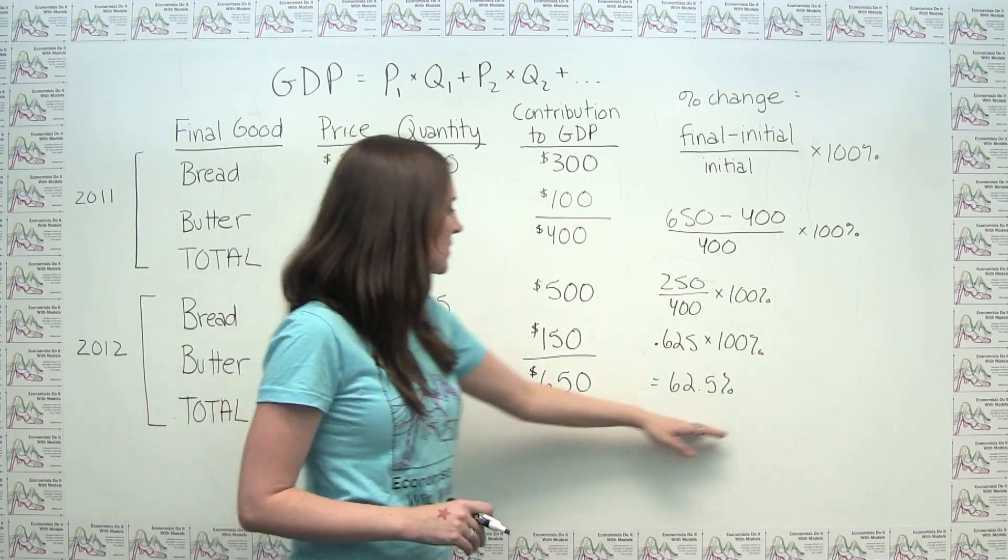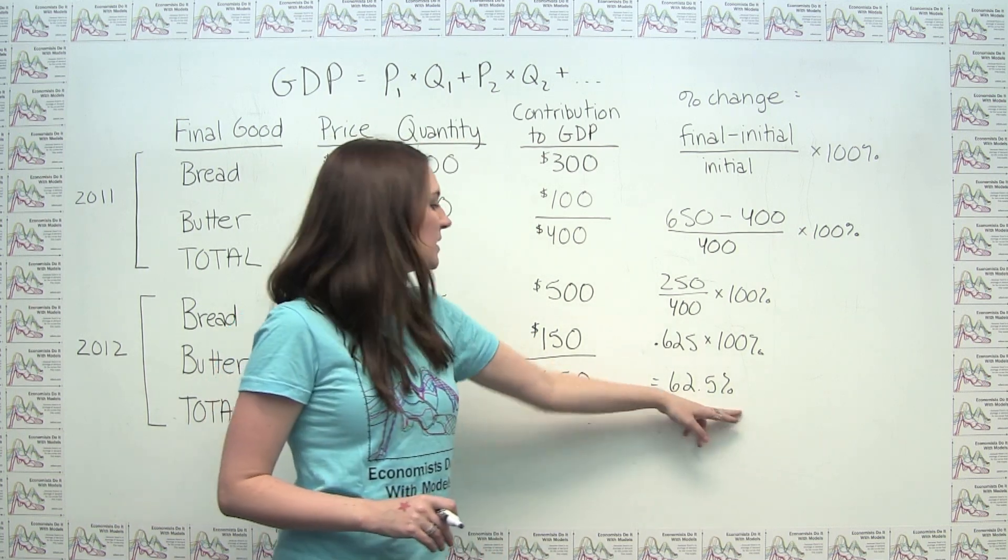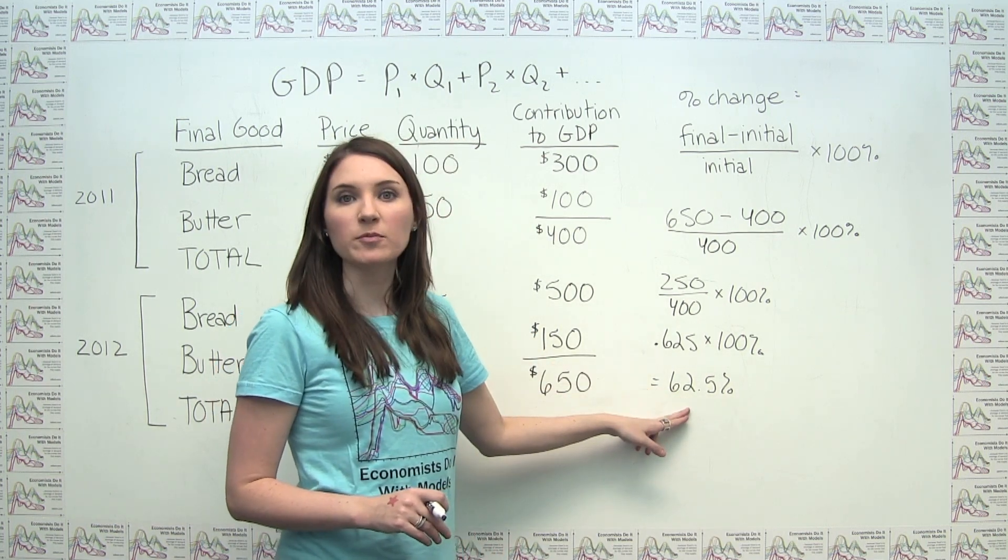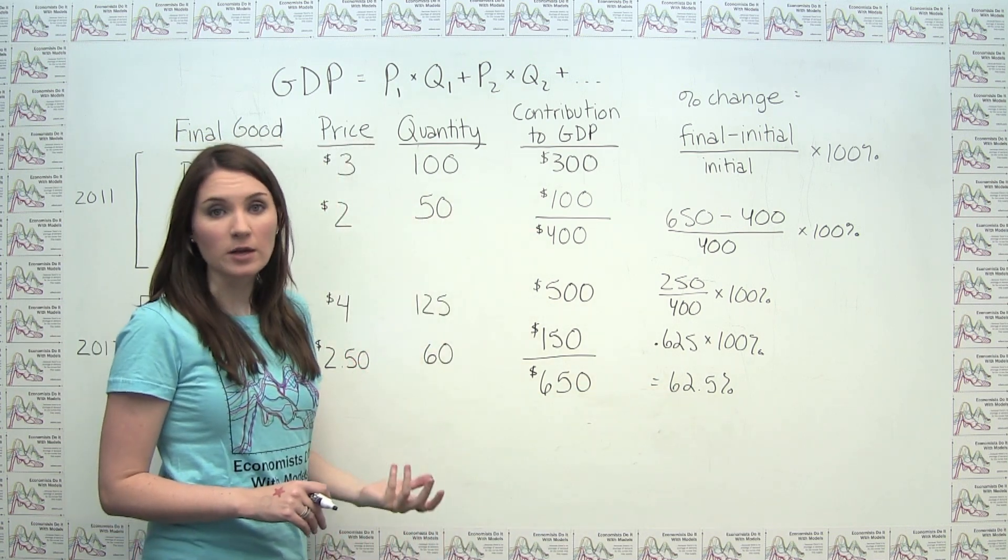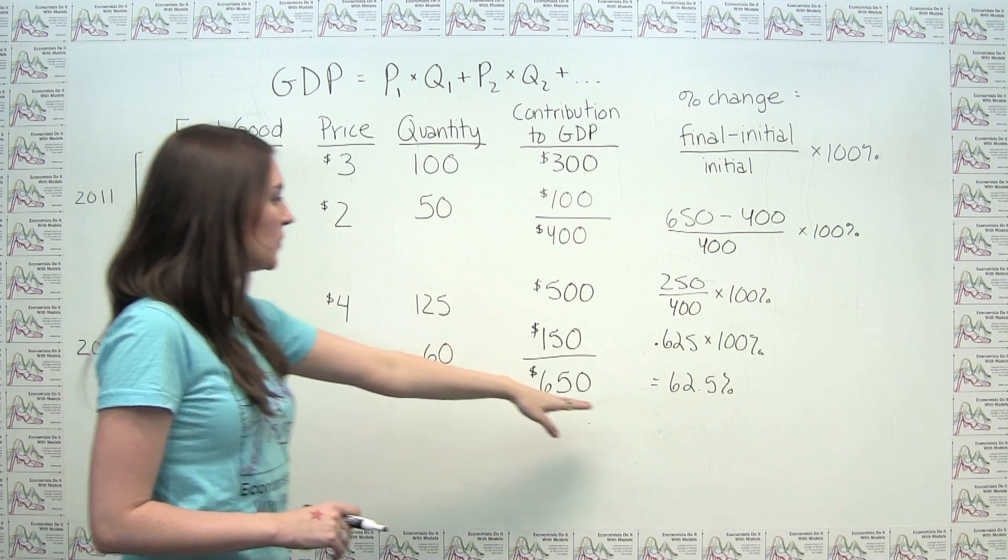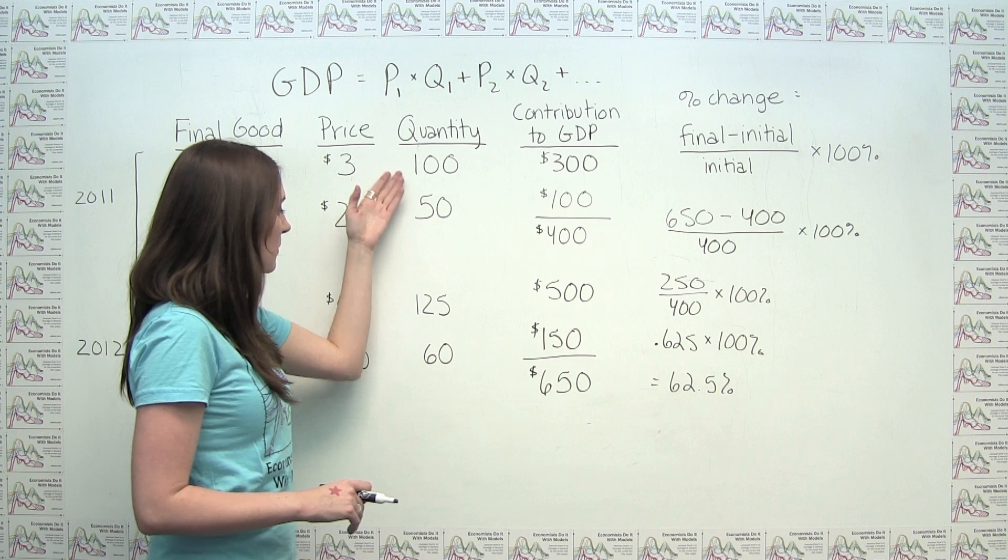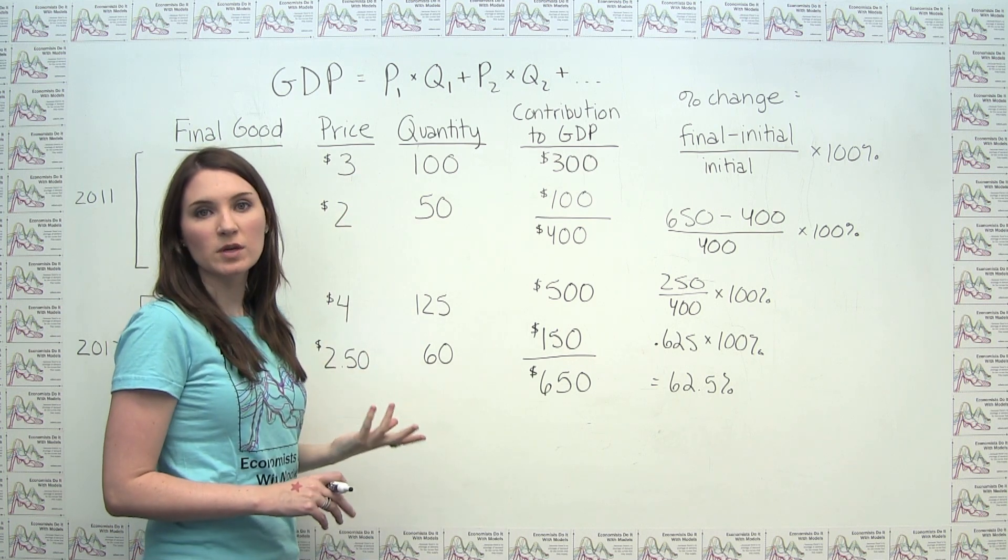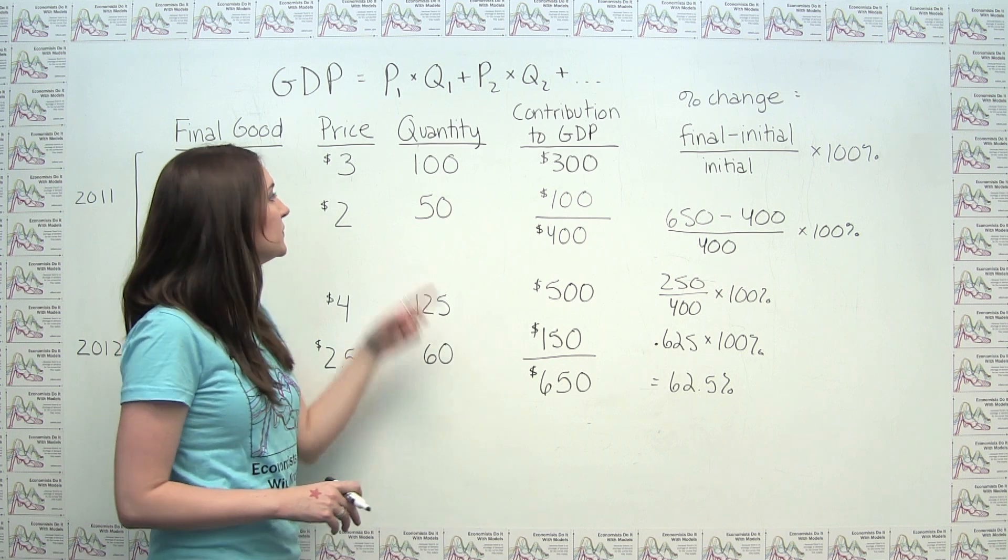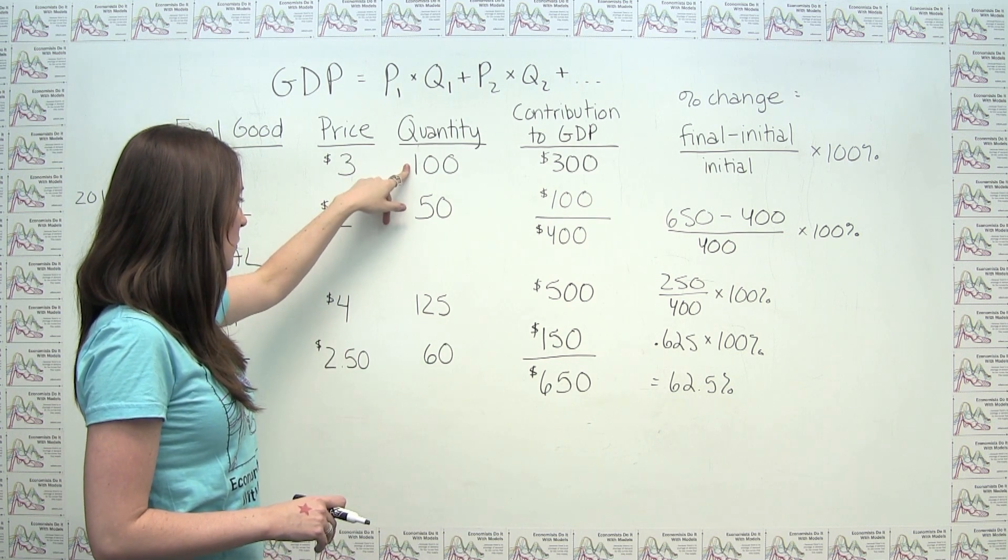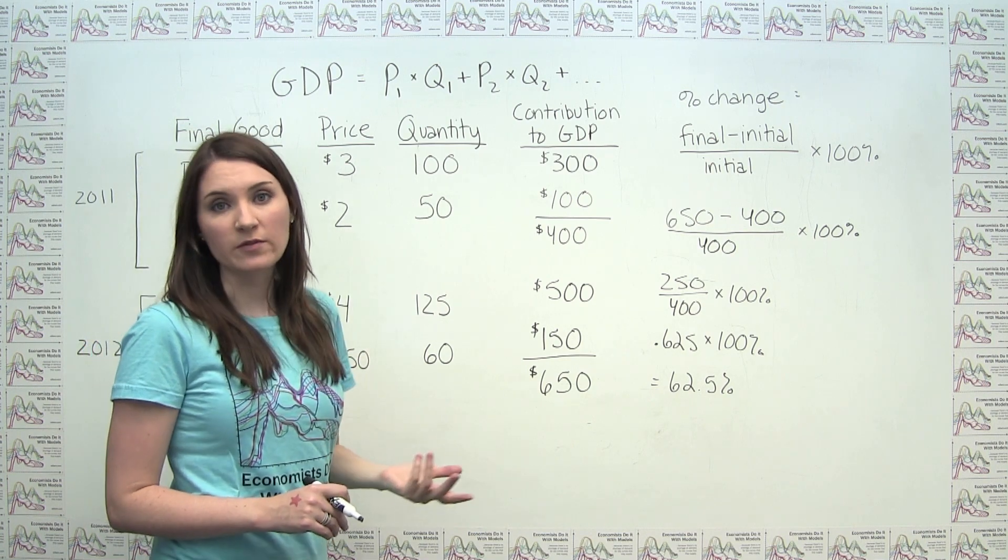It's important to understand where this change in nominal GDP, in this case a value of 62.5%, comes from. So we can look over here to try to understand what's going on. You'll notice that part of the change that we see here is due to the fact that there's actually more of both goods being produced in 2012 than was produced in 2011. We'll notice our production of bread went from 100 units to 125 units, for an increase of 25%.